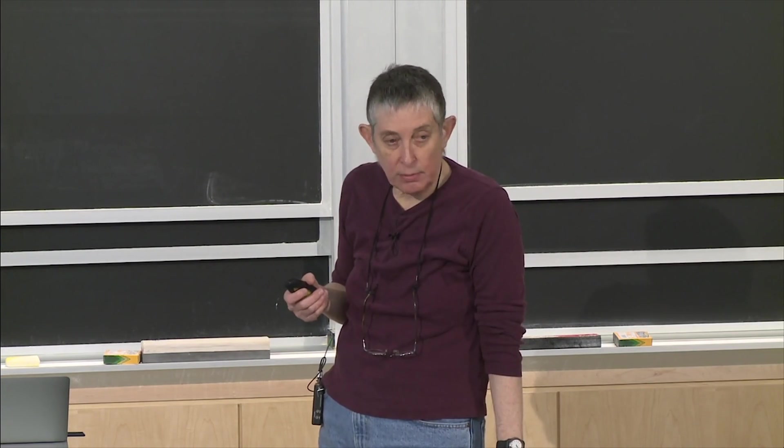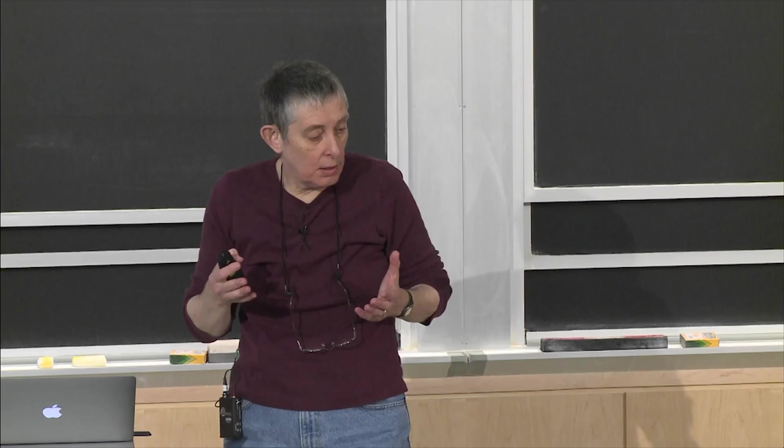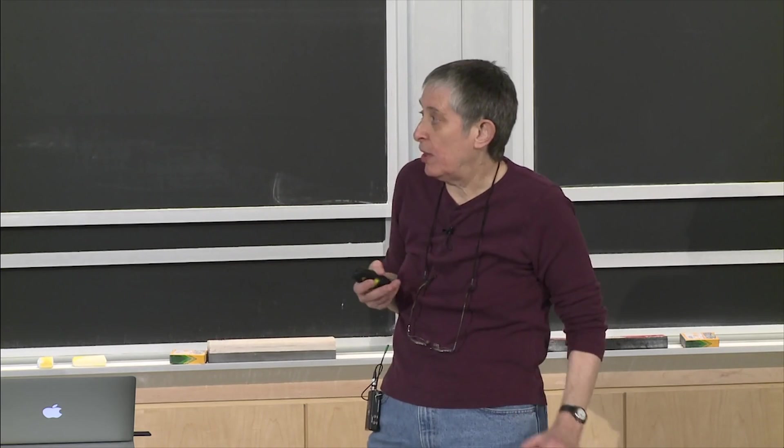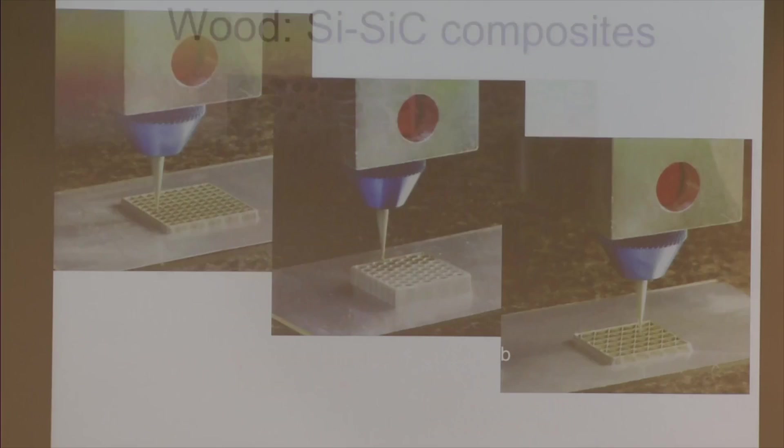Sometimes when people say biomimicking, some people think of it as kind of replicating something. But it doesn't have to be just replicating something. It can also be some design inspired by the biological material. But this thing really is a replica. This was another version where they took the silicon carbide material and then infiltrated that with liquid silicon to get a fiber reinforced material, like the wood composites we talked about.